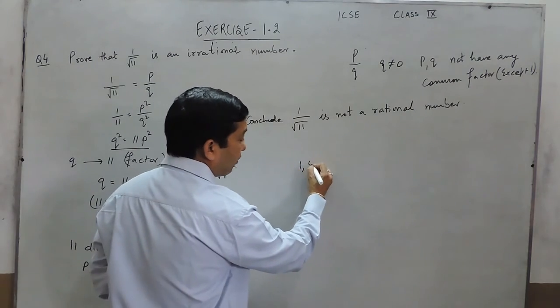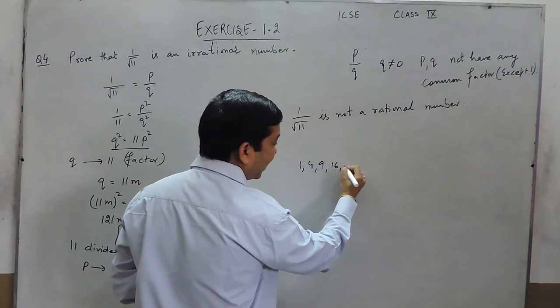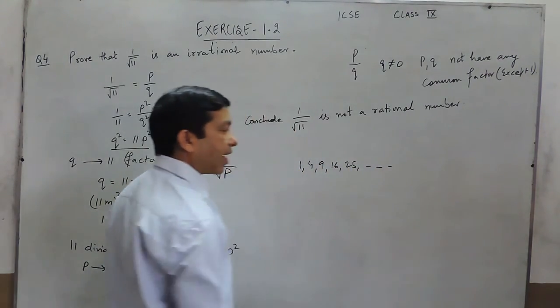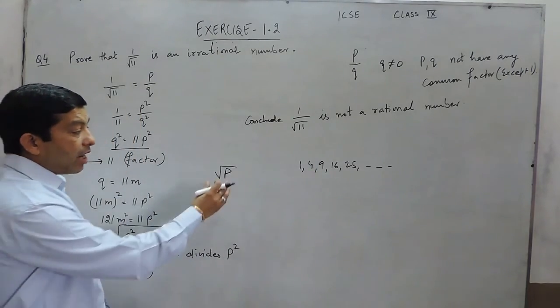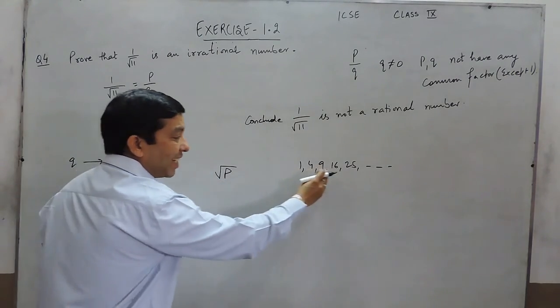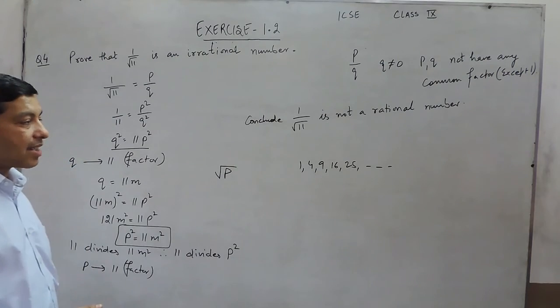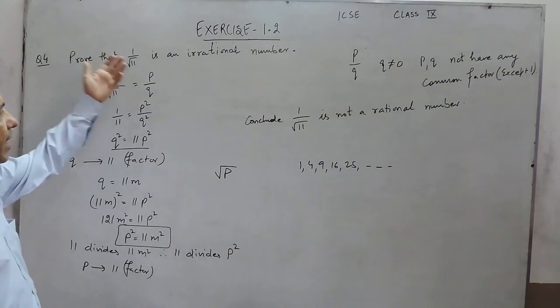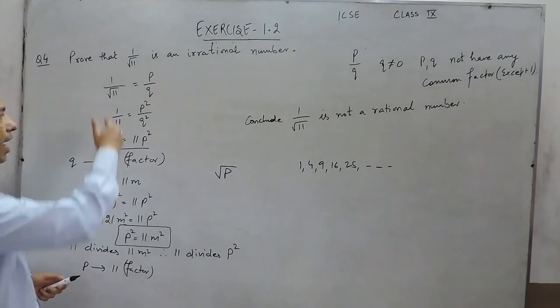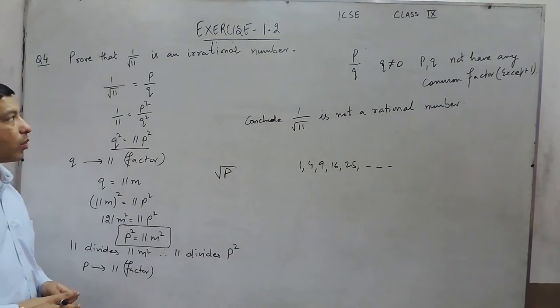Perfect square means 1, 4, 9, 16, 25, for which we can find out the under root. If under root P of these values are there, it is a rational number, otherwise in all the cases it is an irrational number, and the procedure of solving the question will remain the same for all the questions.